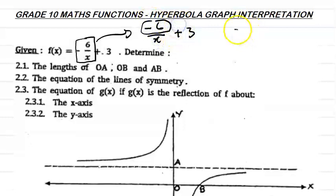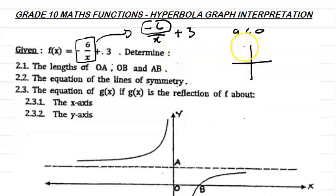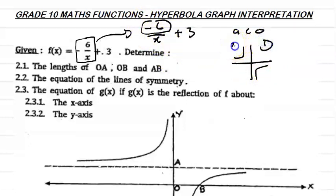If a is negative — a is less than 0 — what does that mean? It means that my hyperbola is going to be drawn in the second and the fourth quadrants. So if a is negative, that means the graph is going to be drawn in the second and the fourth quadrant.